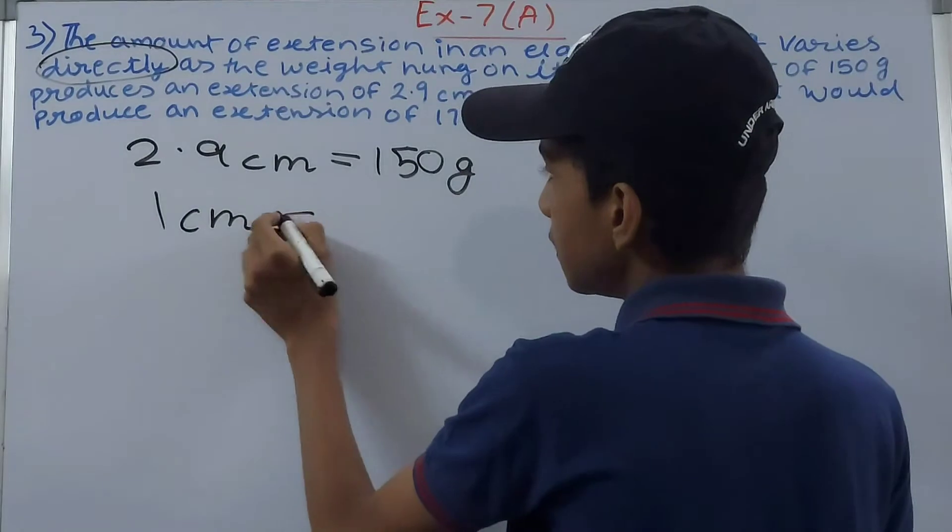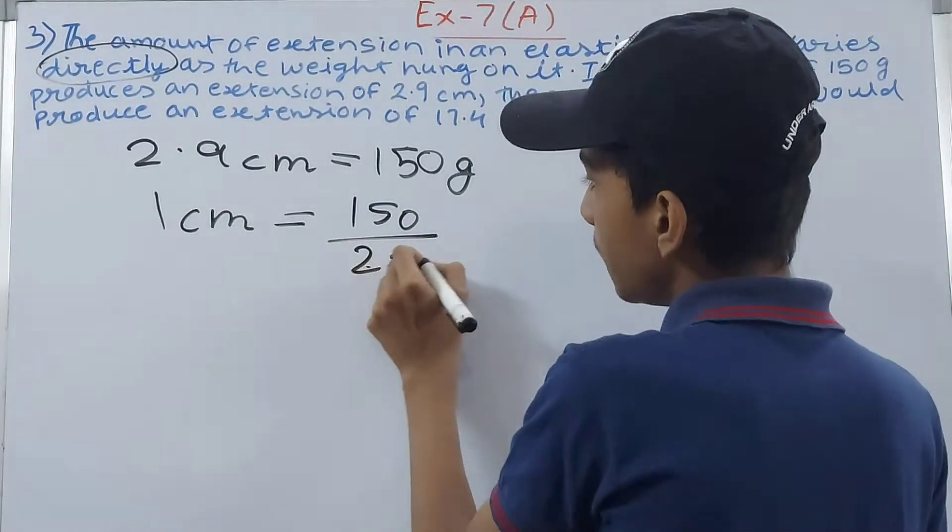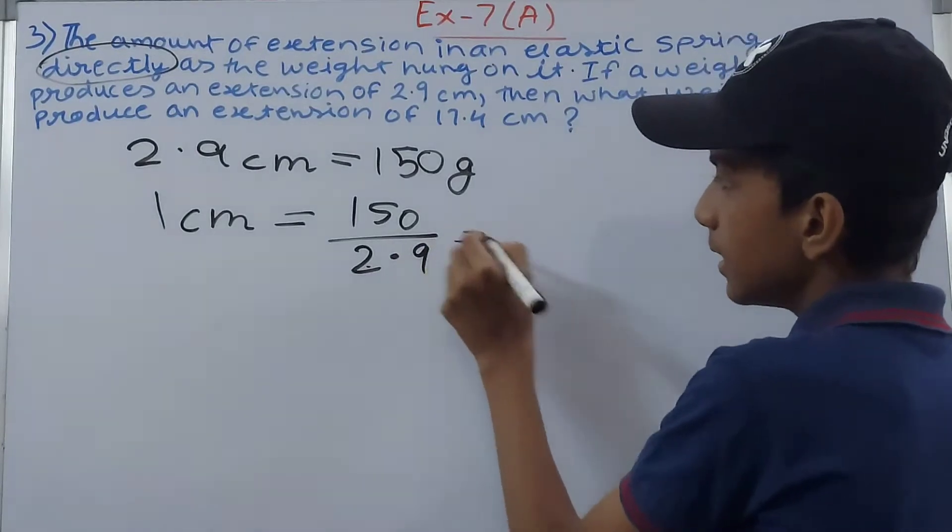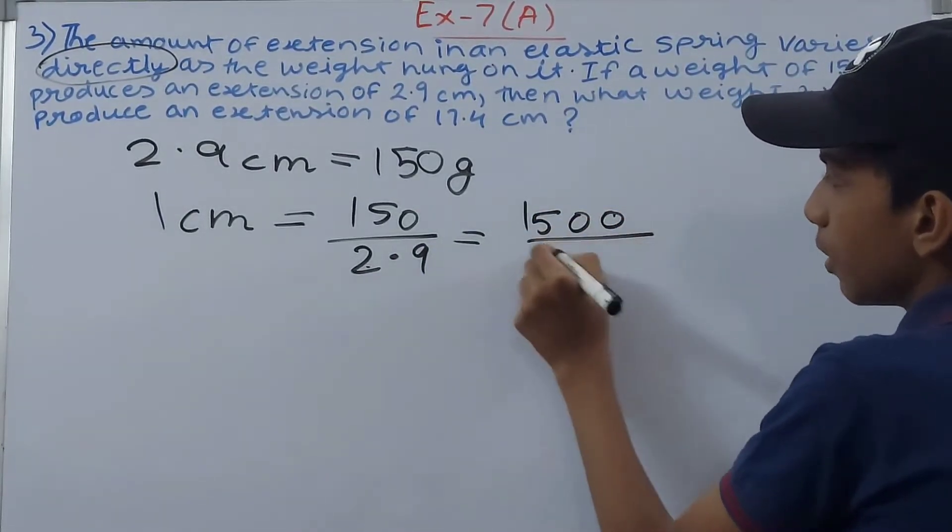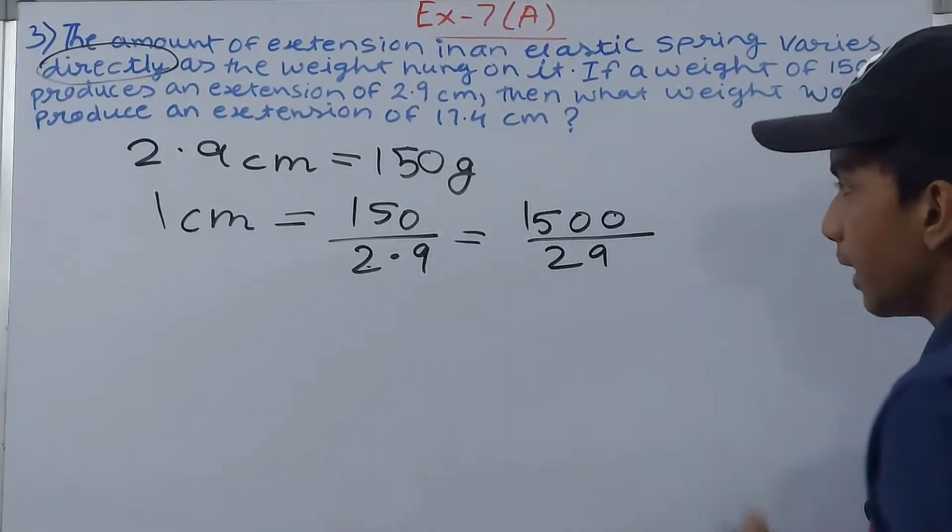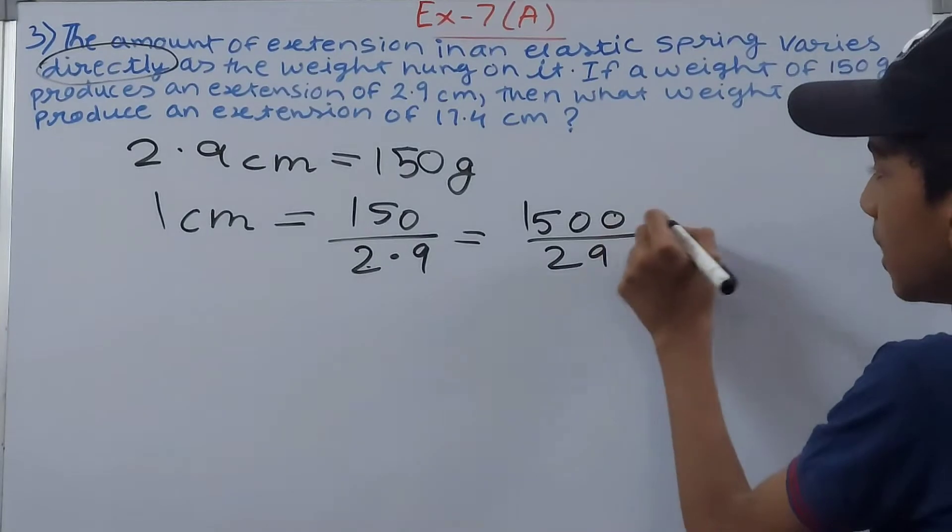One centimeter is equal to 150 upon 2.9. And I'll just solve this. So what will we have? 1500 upon 29. I'll consider this for now, you can write it as grams.